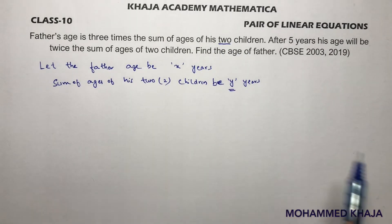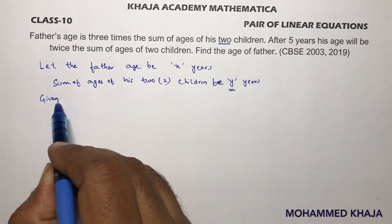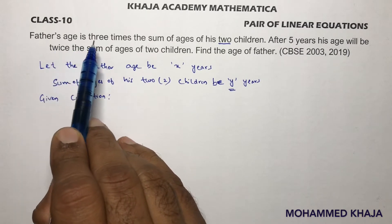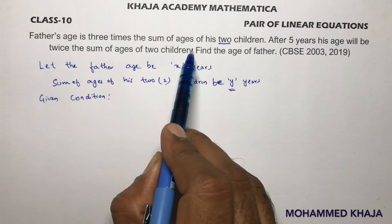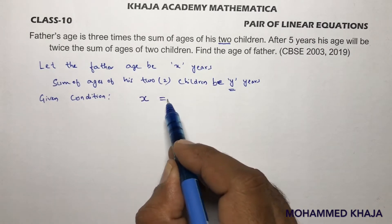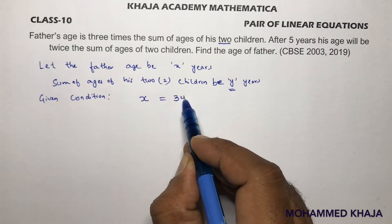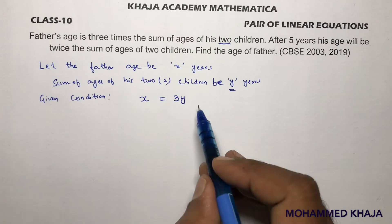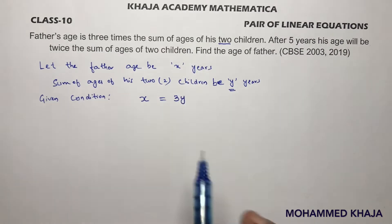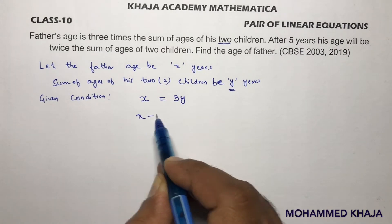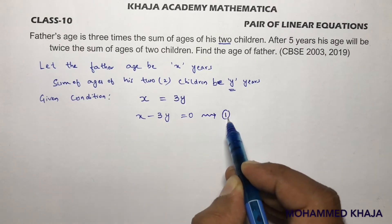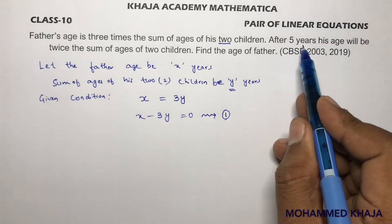The first condition given: father's age is three times the sum of the ages of his two children. So x equals three y, because y already represents the sum of two children's ages. Writing in standard form: x minus three y equals zero. This is equation one.